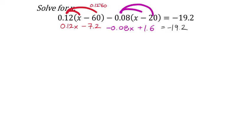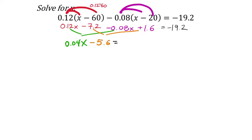Now look for like terms to combine. We have 0.12x and negative 0.08x. How many x's is that? Type in 0.12 minus 0.08 — that gives 0.04x. And negative 7.2 plus 1.6 — type that in the calculator — that should be negative 5.6. This still equals negative 19.2.